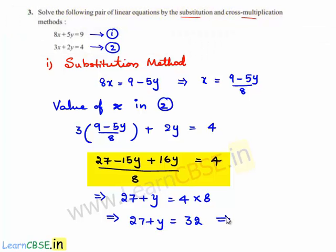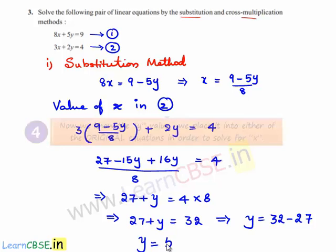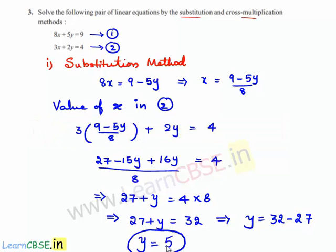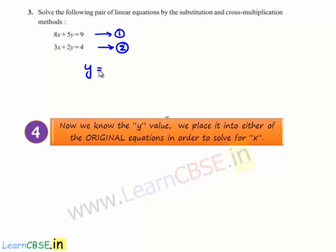This implies y is equal to 32 minus 27. Therefore the value of y is 32 minus 27, which is nothing but 5. We have found the value of one of the solutions: y is equal to 5.